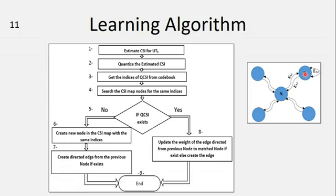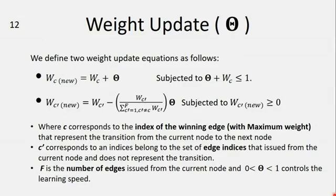For weight update, we update all weights issued from the previous node. So for the winning edge with the maximum weight, here indexed by WC, we will add a scalar theta, which also can be used to control the speed of learning. For the other edge's weight, here indexed by C', we will reduce their weight proportional to their previous weight and also with the scalar theta.